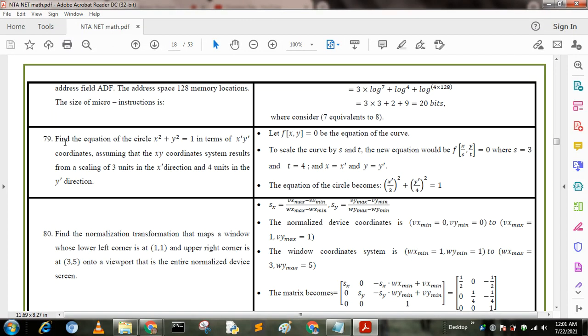Next question: find the equation of the circle x square plus y square equal to 1 in terms of x dash, y dash coordinate, assuming that the x y coordinate system results from a scaling of 3 units in the x direction and 4 units in the y direction. The equation of the curve to scale by s and t, the new equation would be f(x/s, y/t) equal to 0. So s equal to 3 and t equal to 4. We put this value and get the result: x dash by 3 whole square plus y dash by 4 whole square equal to 1.